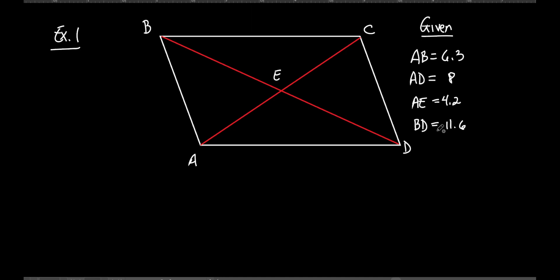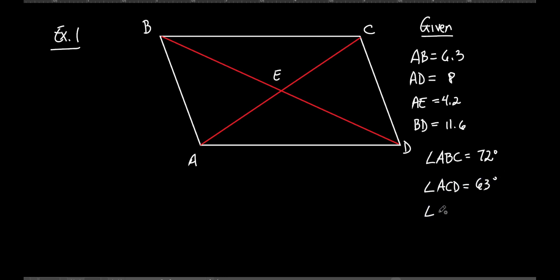And now they tell you some angles. Angle ABC is 72 degrees. Angle ACD is 63 degrees. And angle ABD is 41 degrees. They give you so much stuff — there's barely anything left to find! Well, I'm sure there is plenty to find. So we're going to find six different things.